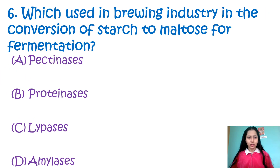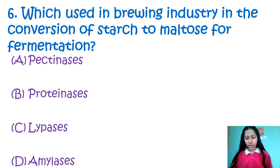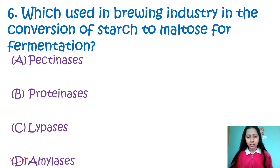Question 6: Which enzyme is used in the brewing industry for the conversion of starch to maltose for fermentation? Option A: pectinase, B: protease, C: lipase, D: amylase. In the brewing industry, for starch to maltose conversion during fermentation, the enzyme used is amylase — or more specifically, alpha amylase. So option D is correct.